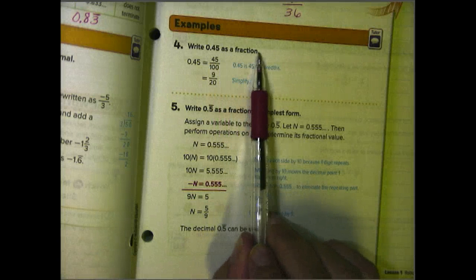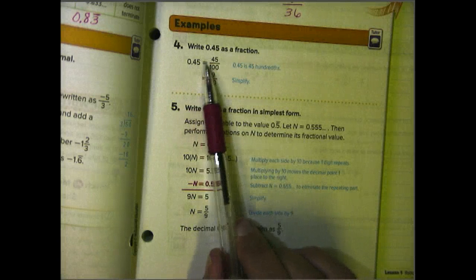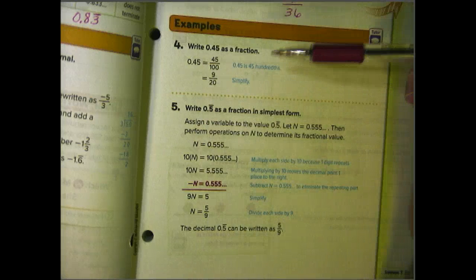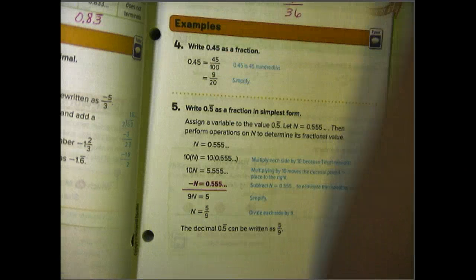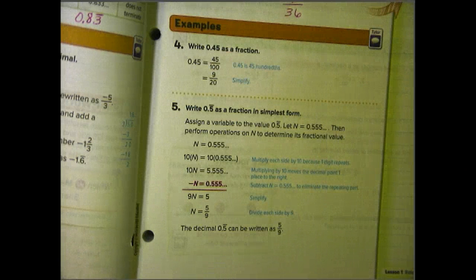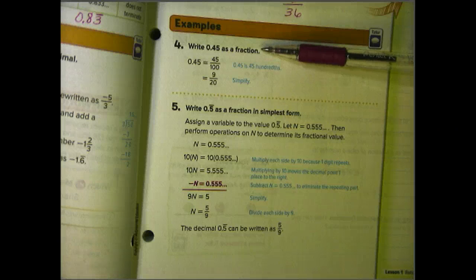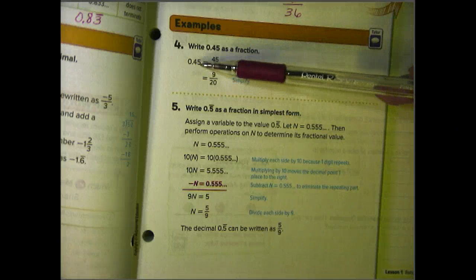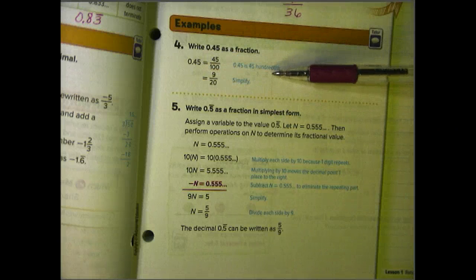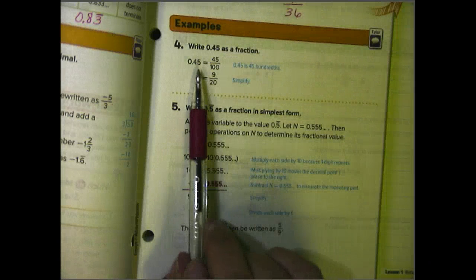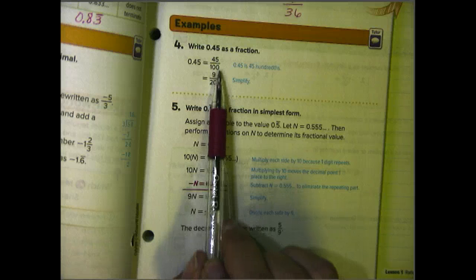So let's look at number 4. Write 0.45 as a fraction. 0.45 equals 45 over 100. Okay, we had a little bit of a problem with the microphone, so I'm not sure where we were. So I'm going to go back and let's look at number 4 again, 0.45 as a fraction, or 45 hundredths if we say it properly. We're going to divide 45 by one hundredths. Because it's in the hundredths place, we would put it over 100 and then simplify to 9 over 20.